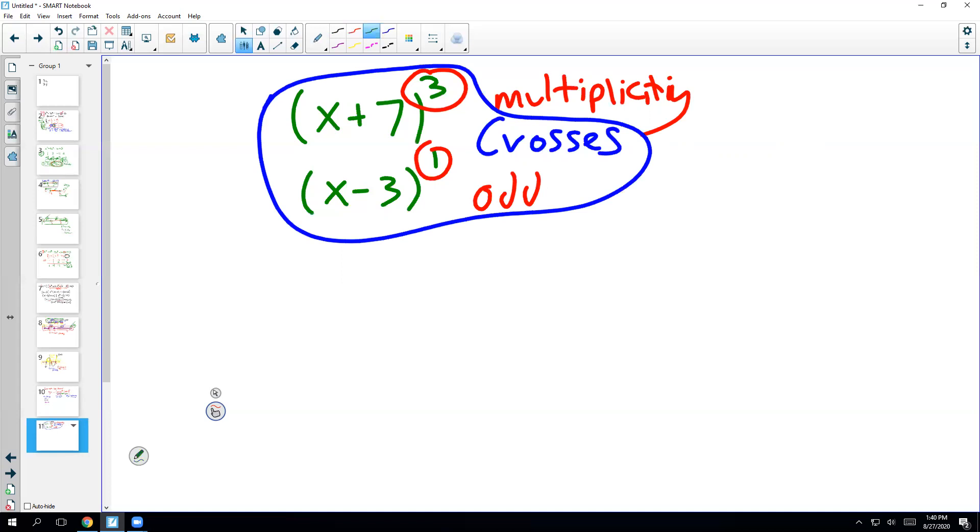But anything that's even, like (x minus 4) to the 8, or (x plus 2) squared, it's usually only going to be squared.